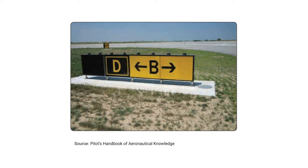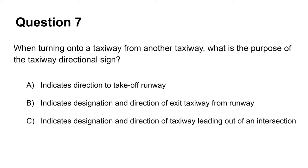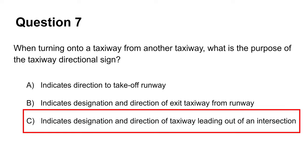This next photo shows typical taxiway markings. First, there is a taxiway location sign, which is written in yellow on black and identifies the taxiway on which the aircraft is located. Second, there is a taxiway directional sign, which this question asks about. Taxiway directional signs are written in black on yellow and show the direction of the upcoming taxiway at the intersection. Thus, the answer to this question is C. Choices A and B are both wrong, since taxiway directional signs deal with one taxiway leading out of another taxiway and have nothing to do with runways.